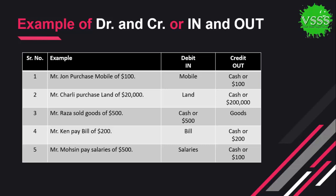In the third example, Mr. Raza sells goods worth $500. The cash is coming to us because we are selling goods, so cash will be debited. The goods are going from us, so goods will be credited.